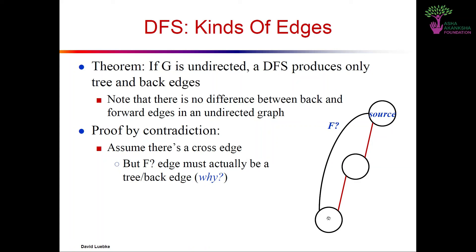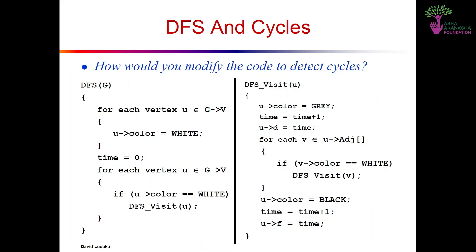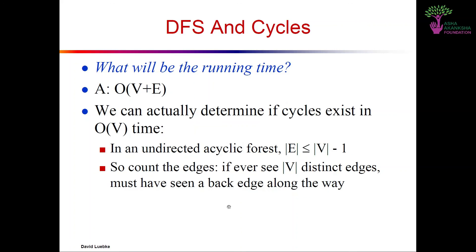Tree and back edges are the most important; most algorithms don't distinguish between forward and cross edges. There is a theorem: if G is undirected, a DFS produces only tree and back edges. For undirected graphs there is no distinction between back and forward edges, since you can traverse an edge in both directions — from descendant to ancestor or ancestor to descendant. Back edges and forward edges become the same in undirected graphs.